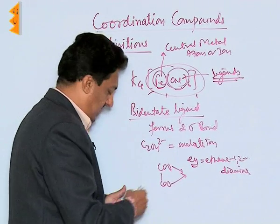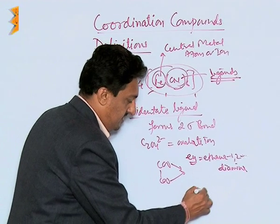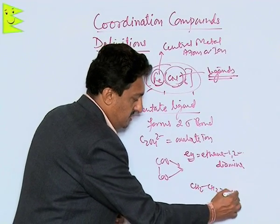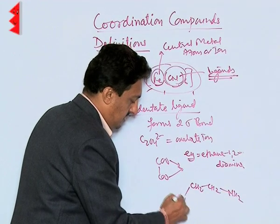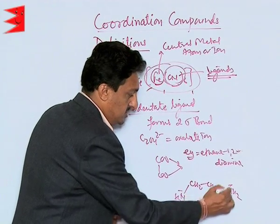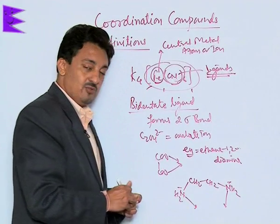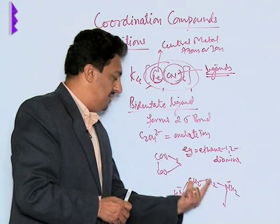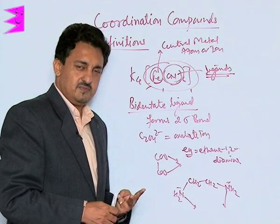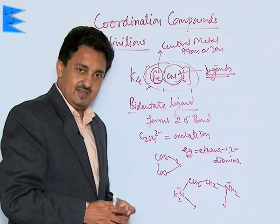Another example of a bidentate ligand is 'en', ethane-1,2-diamine. Its structure is CH₂–CH₂–NH₂–NH₂. It can donate electrons from the two nitrogen atoms simultaneously and form two bonds, which is why it is called bidentate.